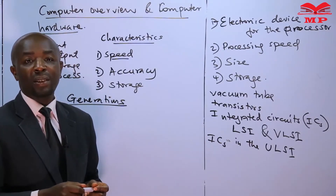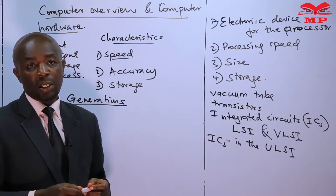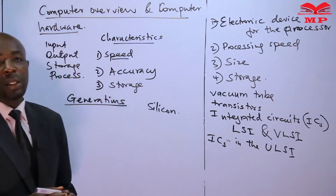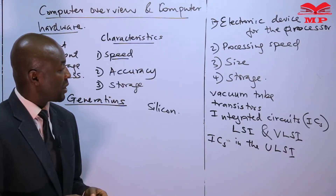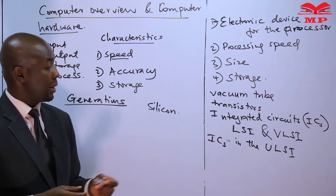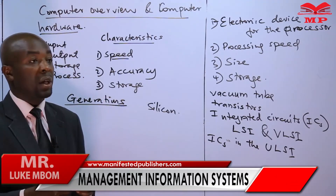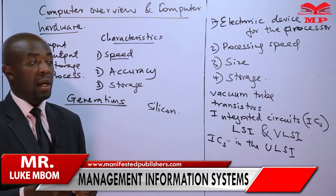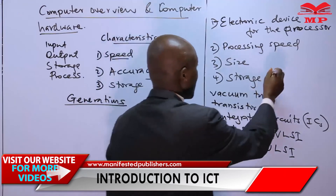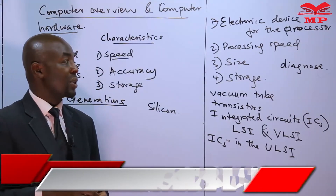For the fifth generation computers, the internal circuitry was designed using semiconductors, like silicon. Silicon is a semiconductor that facilitates very large storage, and data can be stored over very long periods. These computers were very small in size. Other features of the fifth generation include parallel processing. Today we are saying that fifth generation computers will be able to diagnose themselves and propose how errors or faults can be corrected.